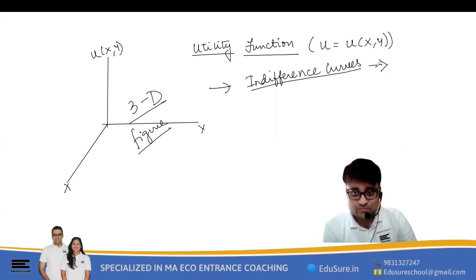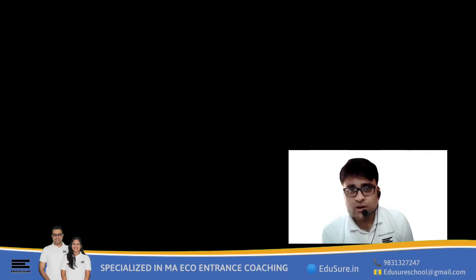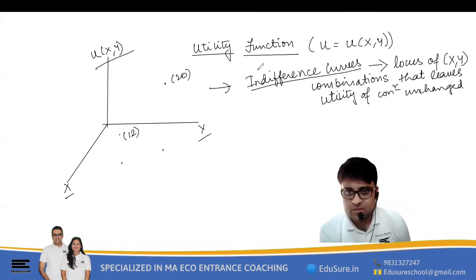Indifference curves enabled an economist to identify the utility of a consumer in a 2D diagram. Now how did they do that? Indifference curves is basically the locus of all XY combinations that leaves the utility of a consumer unchanged. So in order to come out of the 3D dilemma, the economists came up with indifference curves: the locus of all XY combinations that leaves the utility of a consumer unchanged.